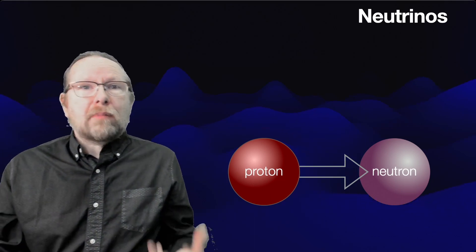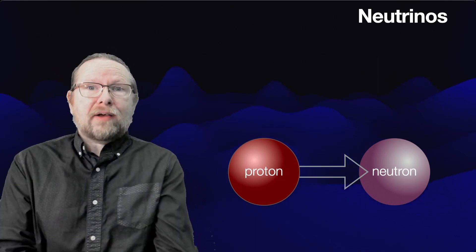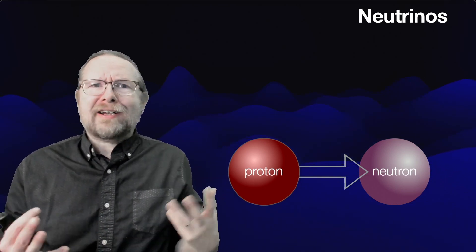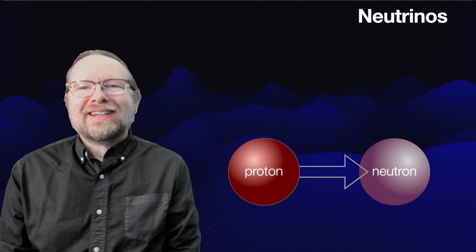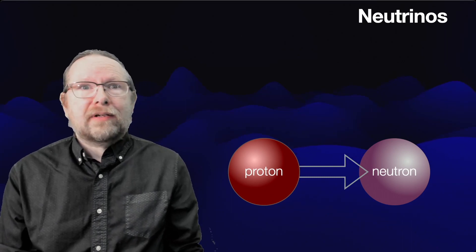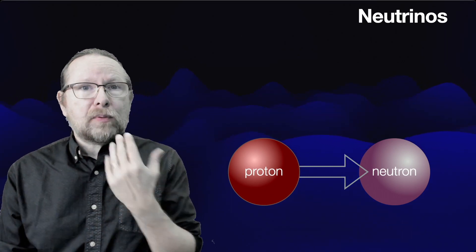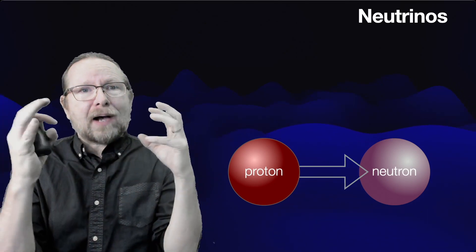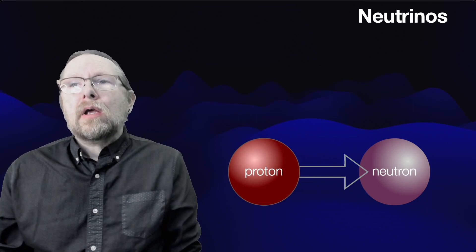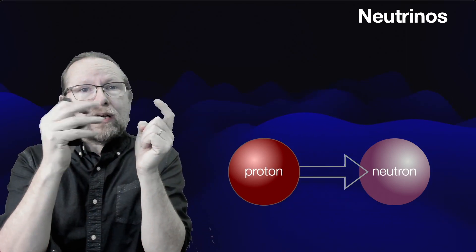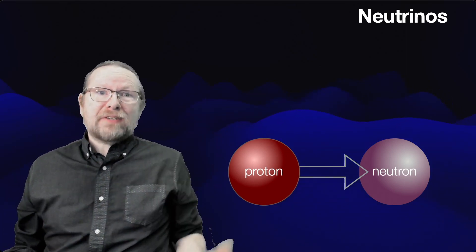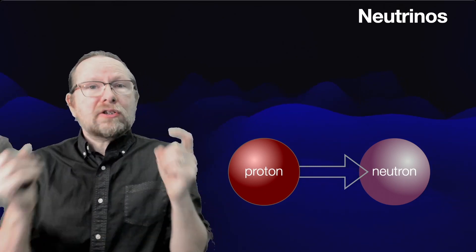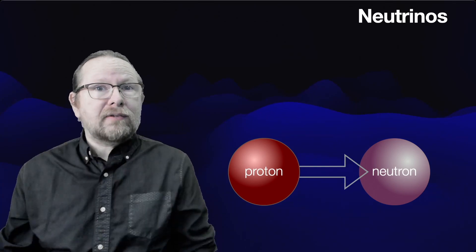The modern theory that describes how that force works is called quantum electrodynamics, which is an example of a quantum field theory. Our modern picture of what subatomic interactions are is an exchange of particles with one another — these particles are quanta of a field. The electromagnetic force, the force that causes electrical attraction and repulsion, is caused by the exchange of photons of light.